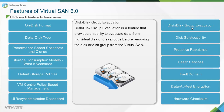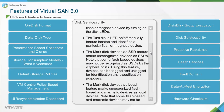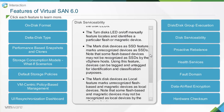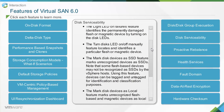Disk or disk group evacuation is a feature that provides the ability to evacuate data from individual disks or disk groups before removing them from the Virtual SAN. Disk serviceability enables administrators to easily map the location of magnetic disks and flash devices. The 'light LED on failures' feature identifies permanently damaged flash or magnetic devices by turning on disk LEDs. The 'turn disk LED on or off manually' feature locates and identifies a particular flash or magnetic device. The 'mark disk devices as SSD' feature marks unrecognized devices as SSDs.